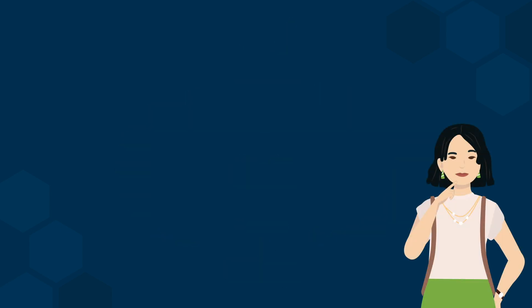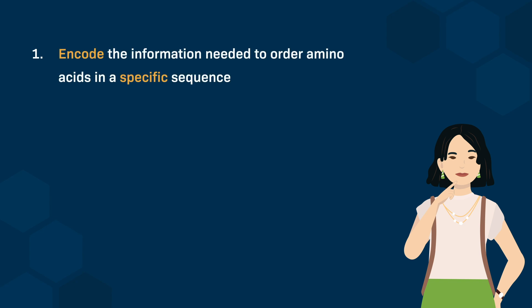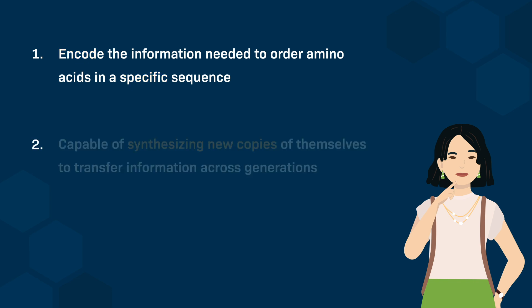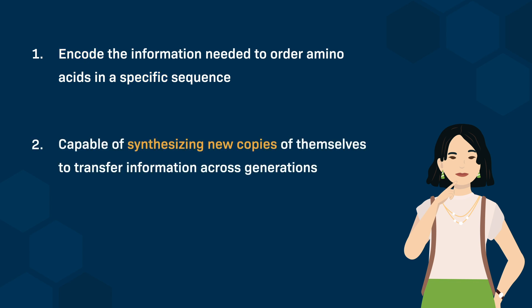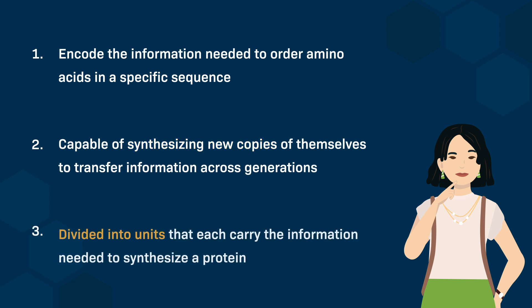The information-bearing molecules we are looking for must encode the information needed to order amino acids in a specific sequence during protein synthesis. They must be capable of synthesizing new copies of themselves to transfer the information across generations. These molecules should be divided into units, with each unit carrying the information necessary to synthesize a protein.